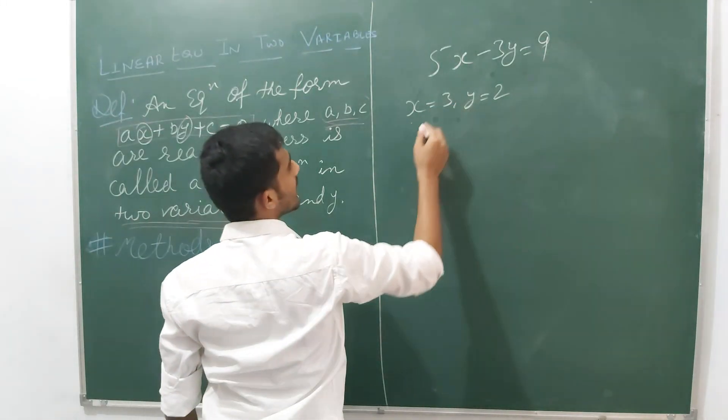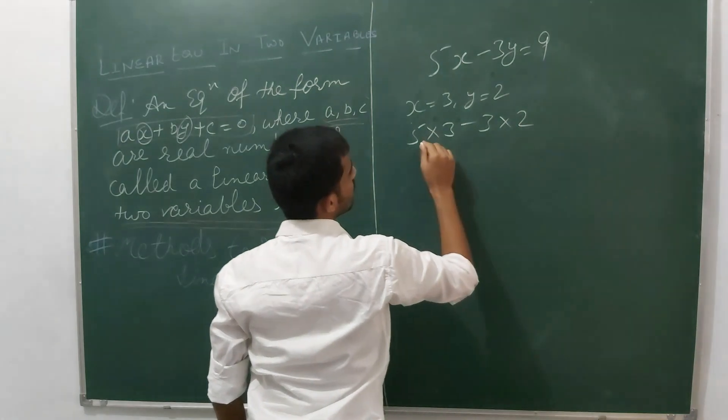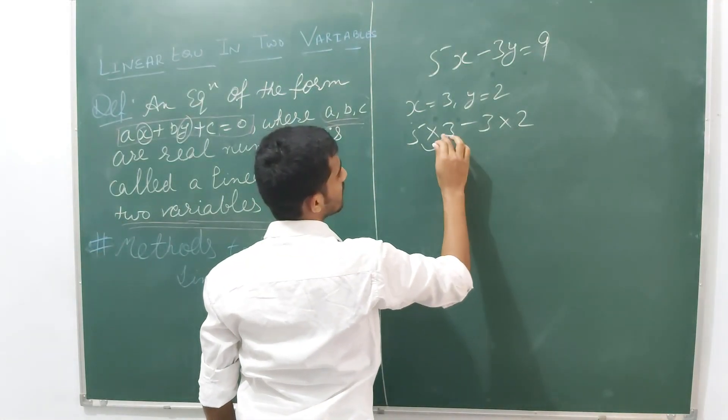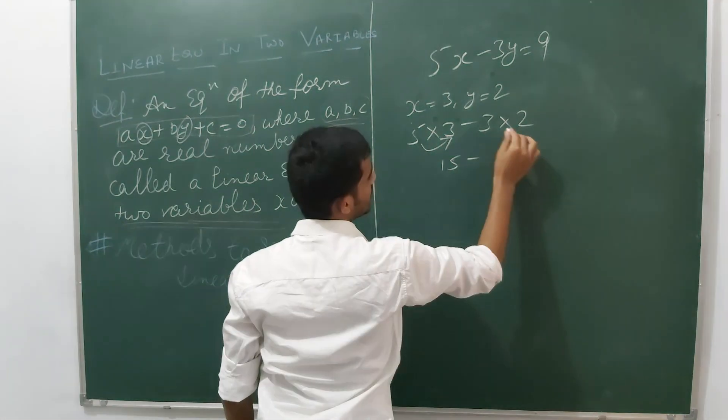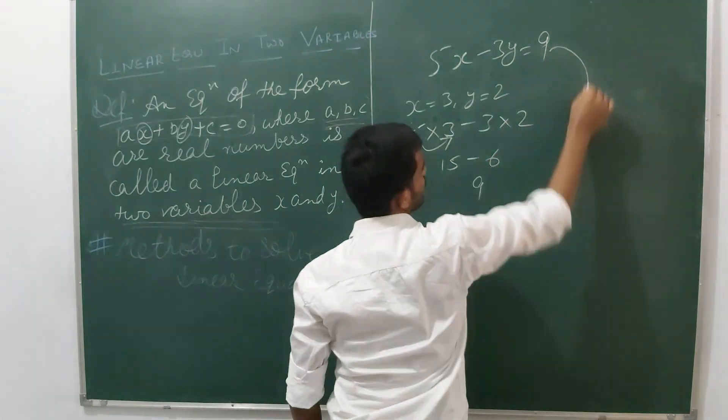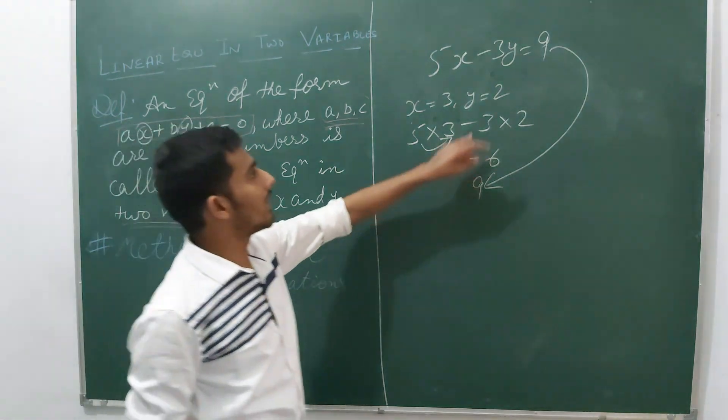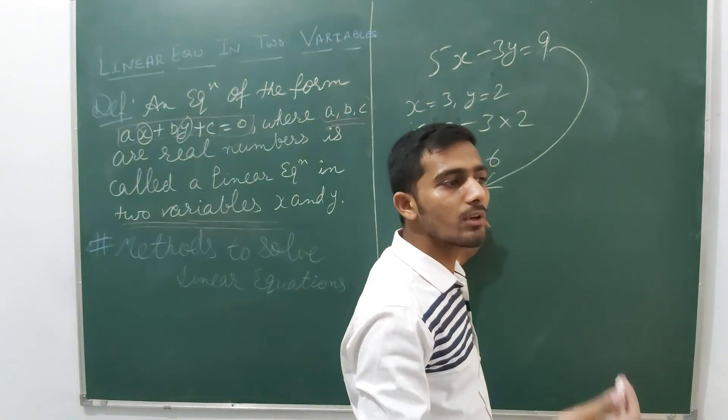Basically, we have to put the x value and y value. 5 times 3 equals 15, 3 times 2 equals 6, 15 minus 6 equals 9. So left hand side equals right hand side. We are clear.